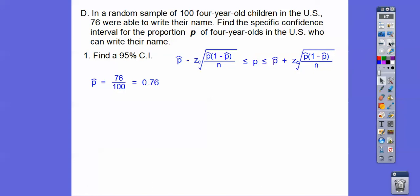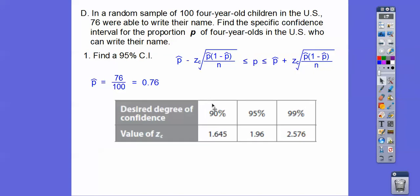We've got to get P-hat. P-hat is 76 out of 100. And then our degree of confidence, since we're doing 95%, we're going to use 1.96. That's what goes right here. And then 0.76 goes here, and the difference, 1 minus 0.76 is 0.24. That's what goes in here. So we're going to calculate this value.